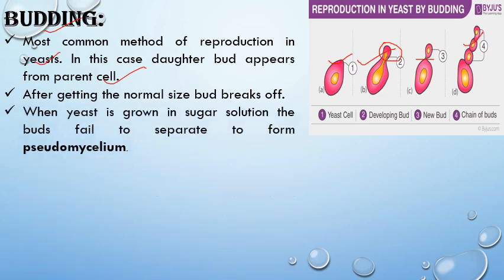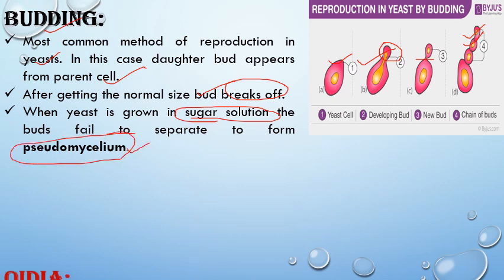After getting the normal size, the bud breaks off. When thrown in a sugar solution, the buds fail to separate from each other, and this structure is known as pseudo mycelium. This method is shown by yeast, that is Saccharomyces cerevisiae.